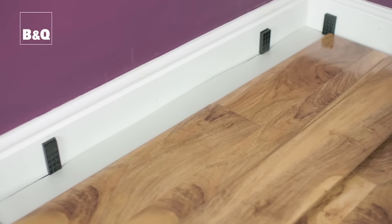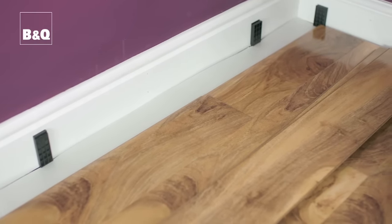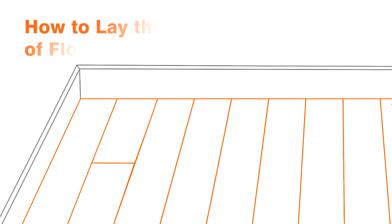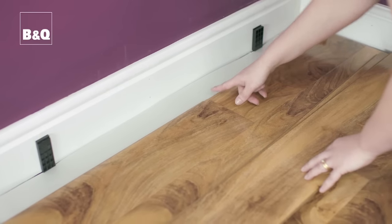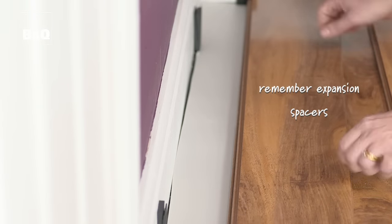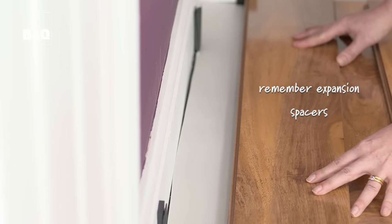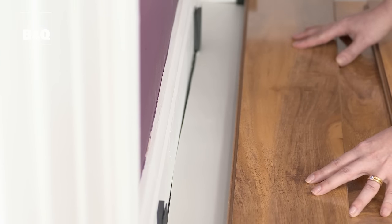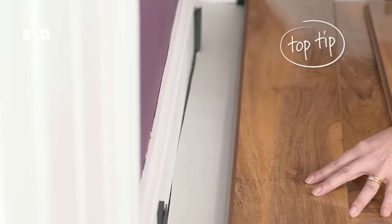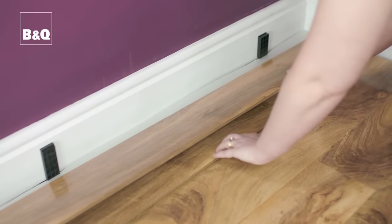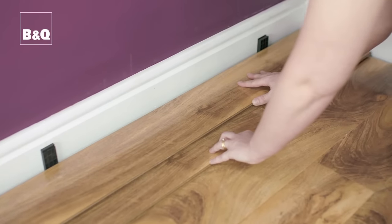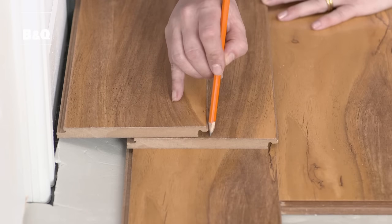Right, that's pipes and doors tackled. On to the last row. To cut boards to fit this row, place the board you want to cut directly over the previous row like this. You can hold it in place with some tack. Use a third board as a template. Press one edge of the template to the skirting board and use the other edge to mark the board underneath.